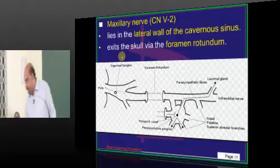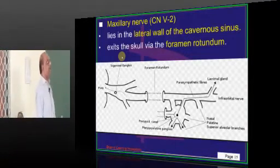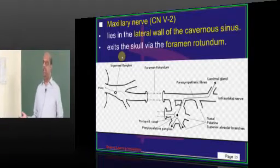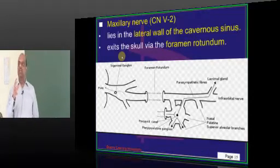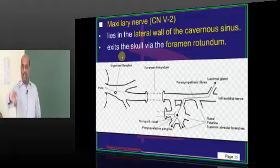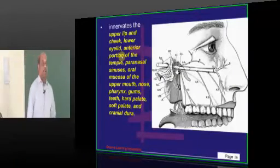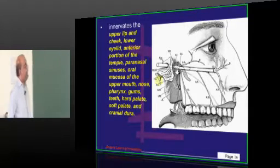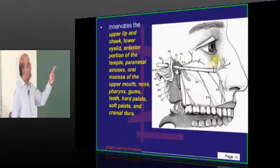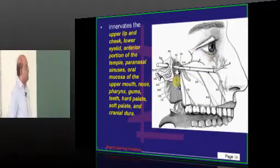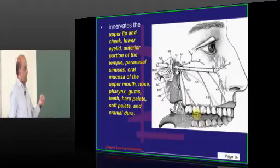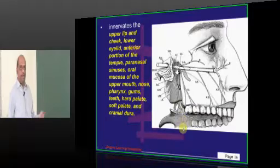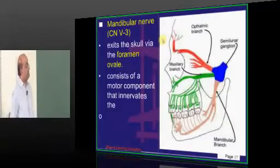The maxillary nerve is the next important nerve, also staying in the lateral wall of the cavernous sinus. It exits through the foramen rotundum. It innervates the upper lip, cheek, lower eyelid, anterior portion of the temple, paranasal sinuses, nasal cavity, upper mouth, pharynx, gums, hard palate, soft palate, and cranial dura.